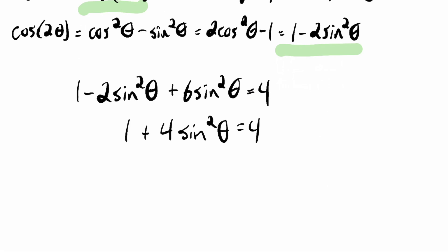So I'll have 4 sine squared theta equals 3. And I'll divide by 4. So I'll have sine squared theta equals 3 over 4.